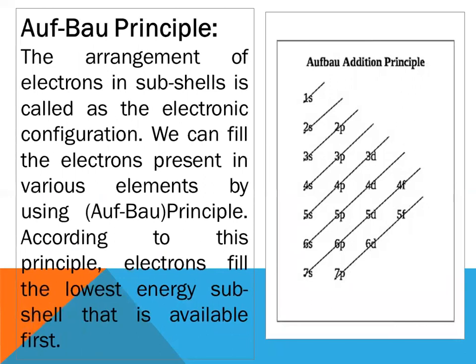Aufbau Principle: The arrangement of electrons in sub-shells is called the electronic configuration. We can fill the electrons present in various elements by using Aufbau Principle. According to this principle, electrons fill the lowest energy sub-shell that is available first.